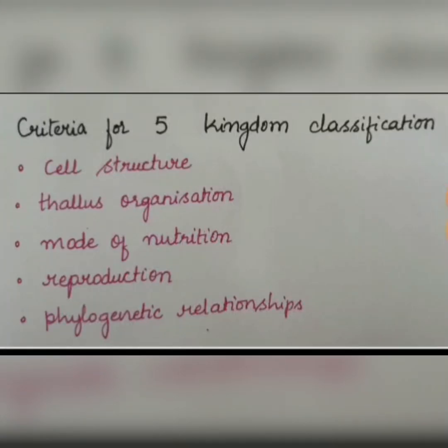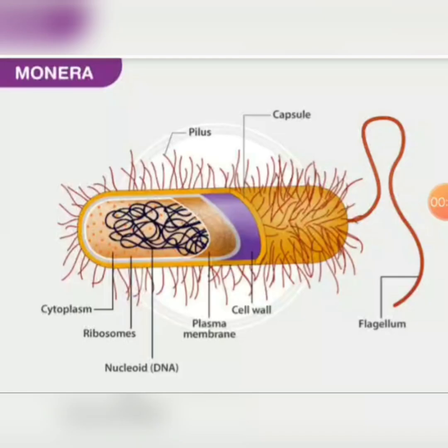The criteria for five kingdom classification include cell structure, thallus organization, mode of nutrition, reproduction, and phylogenetic relationships. Phylogenetic relationships and evolutionary relationships are the same thing. Monera is a kingdom that includes single-celled organisms such as bacteria.